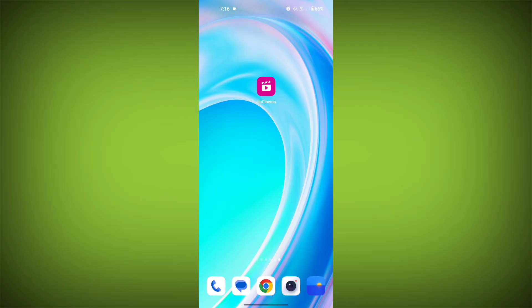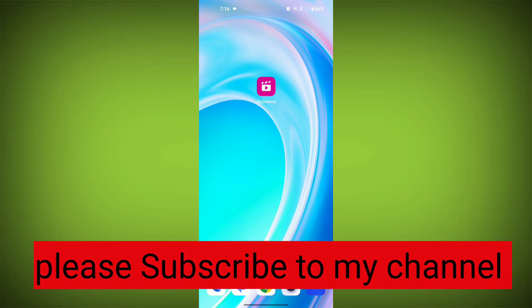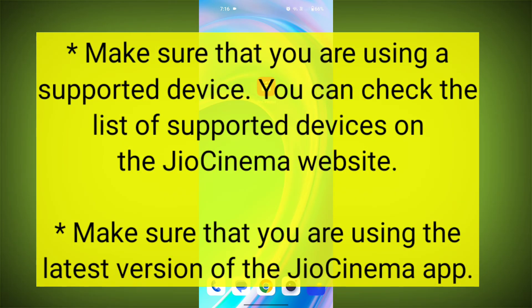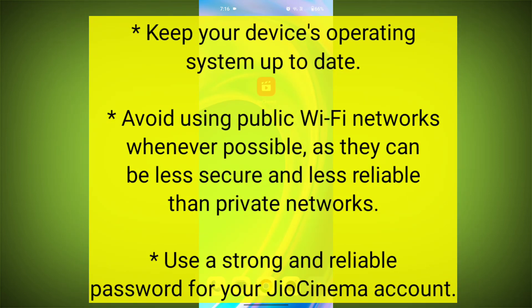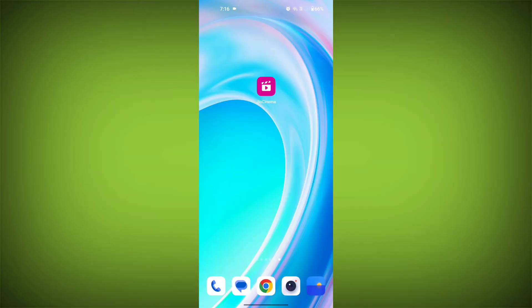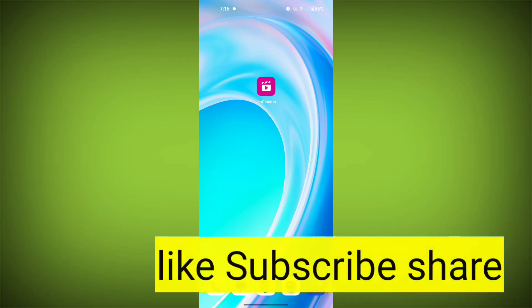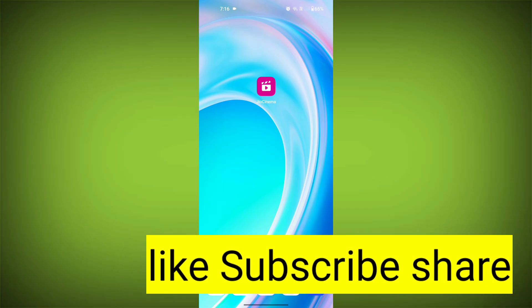Here are some additional tips to help you avoid Geo Cinema errors: make sure that you are using a supported device — you can check the list of supported devices on the Geo Cinema website; make sure that you are using the latest version of the Geo Cinema app; keep your device's operating system up to date; avoid using public Wi-Fi networks whenever possible, as they can be less secure and less reliable than private networks; and use a strong and reliable password for your Geo Cinema account. By following these tips, you can help to protect your Geo Cinema account and avoid common errors.